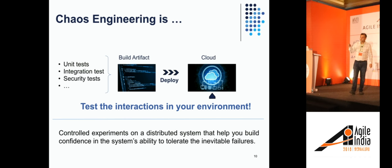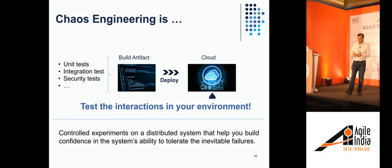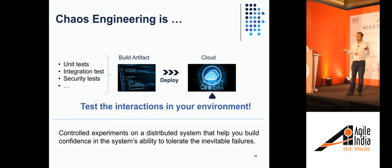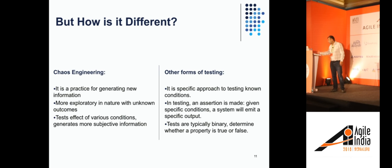Chaos Engineering consists of controlled experiments that you run on your distributed system. These experiments inject some kind of failure — some condition that could potentially happen. For example: I'm running a service with multiple VM instances for resiliency. What happens if one VM goes down? In an ideal world, you have a job scheduler that detects the downed instance, diverts traffic to other instances, spins up a new instance, and ultimately diverts traffic back. How do you know this actually happens? You inject a failure: shut down one instance and observe what happens. That's a controlled experiment — replicating what could potentially go wrong in your cloud environment.